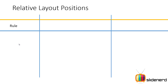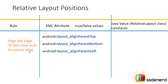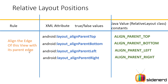Here are some rules. I'm going to talk about XML attributes for your relative layout. They are going to have true or false values, and if you are using the relative layout in Java there are some values that you can use inside your relative layout class. The rule is: align the edge of this view with its parent edge. Let's discuss those with a picture, but before that let me show you the attributes. There is alignParentTop, alignParentBottom, alignParentLeft, and alignParentRight. These are the Java values inside your relative layout class, and these are your XML attributes.